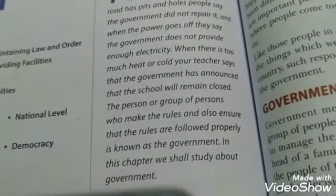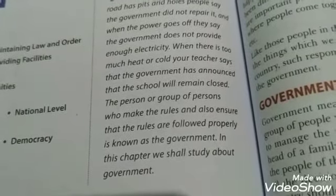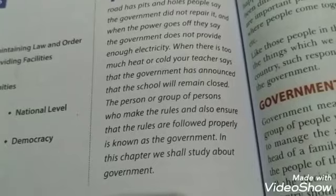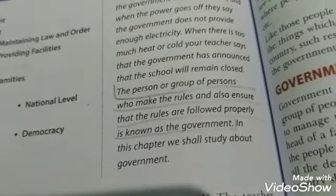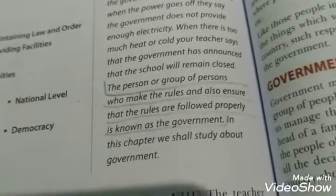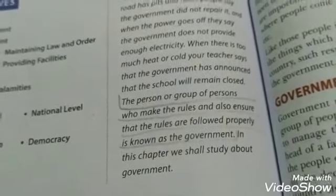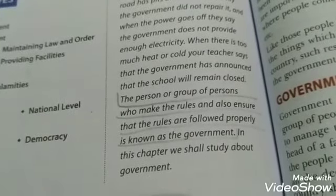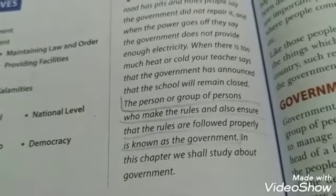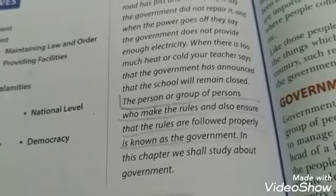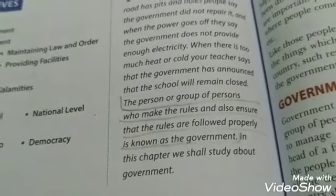The person or group of persons who make the rules and also ensure that the rules are followed properly is known as the government. यानि government एक ऐसा institution या system है जिसमें one person या group of persons हो सकते हैं, जो rule and regulations बनाते हैं, उसको ensure करते हैं कि लोग उसको properly follow करें, और यह पूरे system को establish करते हैं।